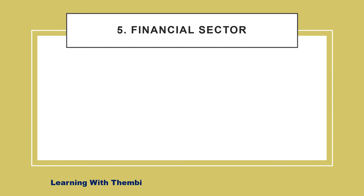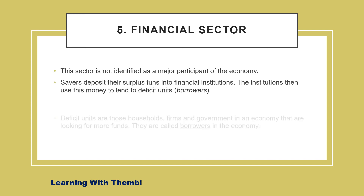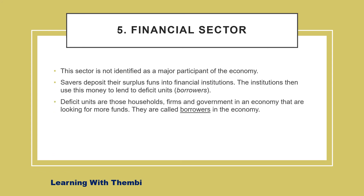The financial sector, which comprises banks and financial institutions, is not regarded as a major participant of the economy. Savers deposit their surplus funds into financial institutions, which then lend money to those running a deficit. Any participant — households, firms, or the government — can be running a deficit and will need to borrow from the financial institutions, making them deficit units or borrowers in the economy.